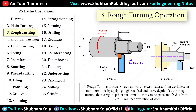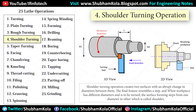In the rough turning process, the average depth of cut is 2 mm to 4 mm, and feed is 0.3 mm to 1.5 mm per revolution of the work. When a workpiece has different diameters and needs to be turned, the surface forms steps from one diameter to another, which is called a shoulder, and machining this part of the workpiece is called shoulder turning.